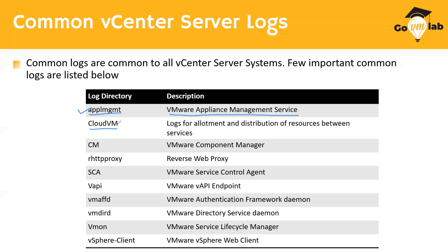Cloud VM is another directory created under /var/log/vmware. It holds logs for the allotment and distribution of resources between services. When you install a vCenter Server, it has CPU, memory, and storage resources, and vCenter Server is made up of multiple services running inside it. To see how resource distribution is happening across these services, you look at the cloud VM folder.